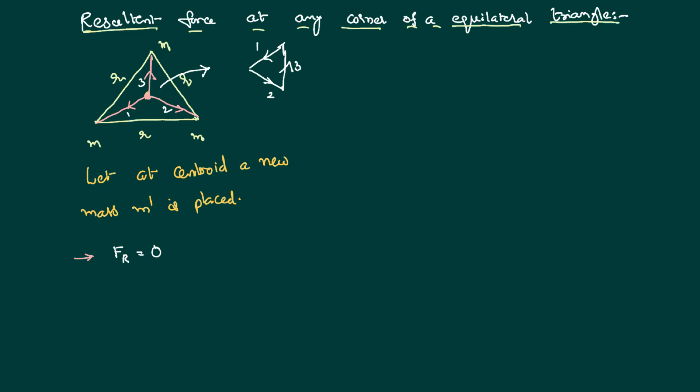Now, we want to continue further. We want to discuss a kind of a scenario where triangle is there. Like the same, equilateral triangle. All masses are equal. All sides are also equal. Let the side is equal to R.